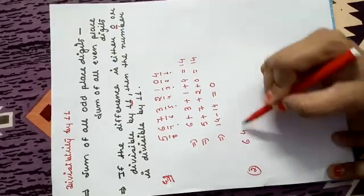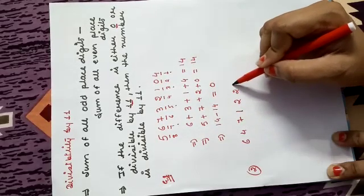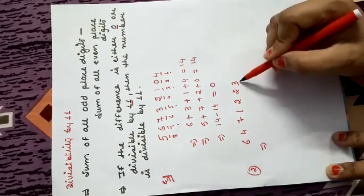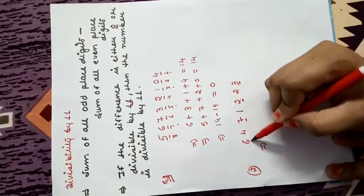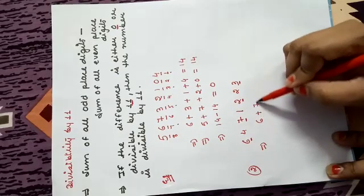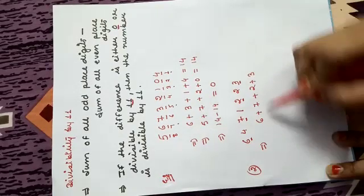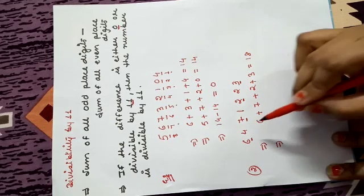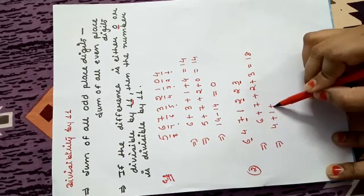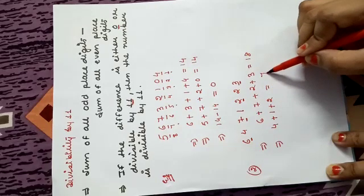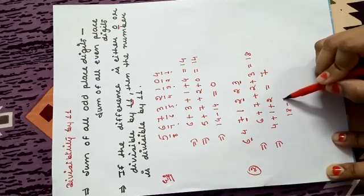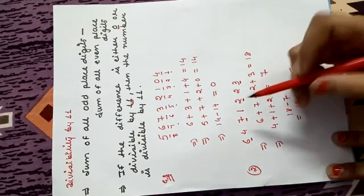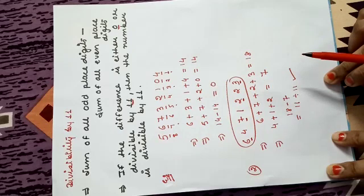One more example: 6471223. Sum of all odd place digits — odd places give 6, 7, 2, 3 — sum is 18. Sum of all even place digits — 4, 1, 2 — sum is 7. Difference: 18 minus 7 is 11, and 11 is divisible by 11. So this number is also divisible by 11. Clear? Thank you.